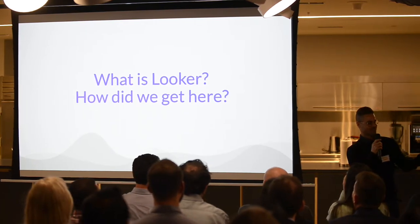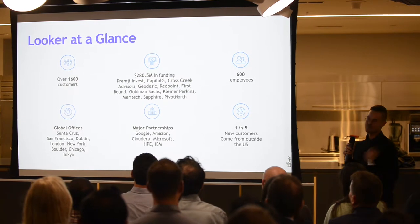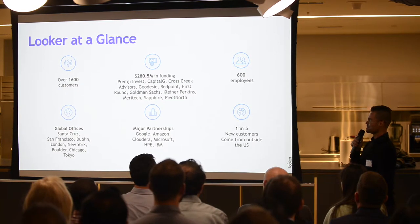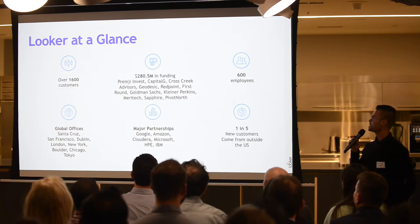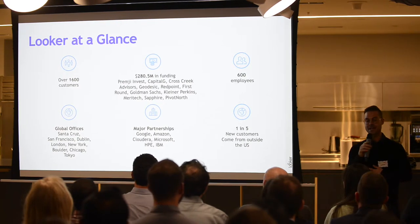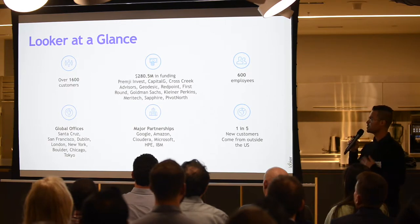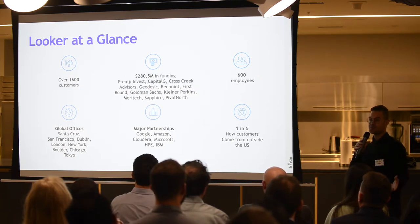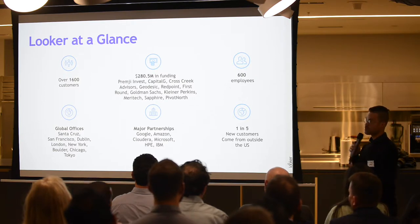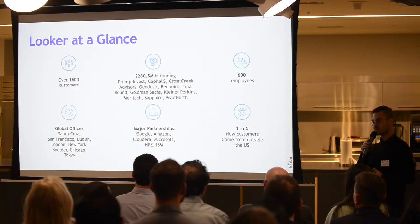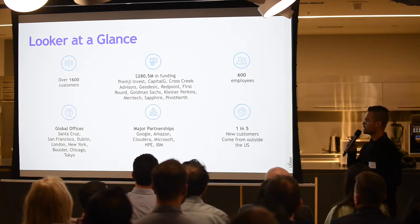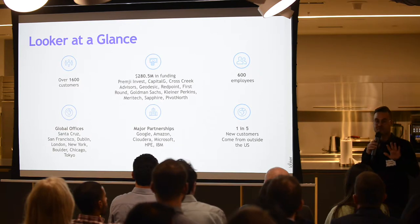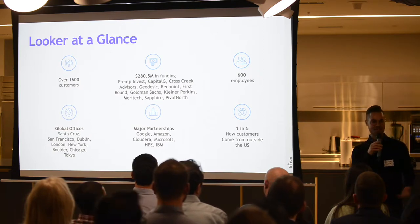What is Looker and how did we get here? Looker has over 1,600 customers. We just got another round of funding — $280.5 million from Capital G, Pippet North, Sapphire, and Geodesic — people who really understand how data is used. We have 600 employees; when I started a little over a year ago it was about 350, so we're growing pretty rapidly. We've got global offices in Santa Cruz, San Francisco, Dublin, London, New York, Boulder, Chicago, and Tokyo — we just added five people in Tokyo last week. It's amazing growth.